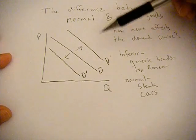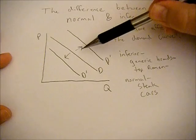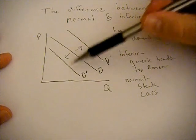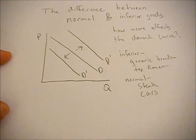And if your income goes down, you're not going to have as much money to buy it. So you're going to consume less of the good, your demand curve will decrease or shift down.